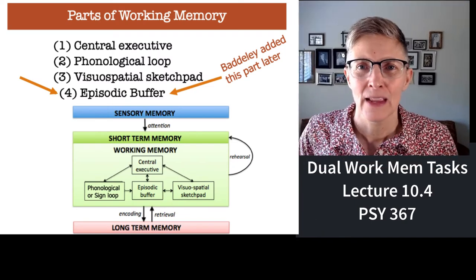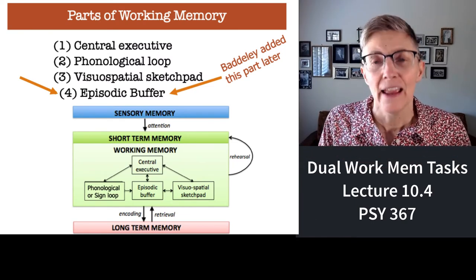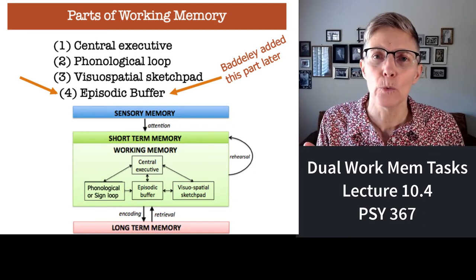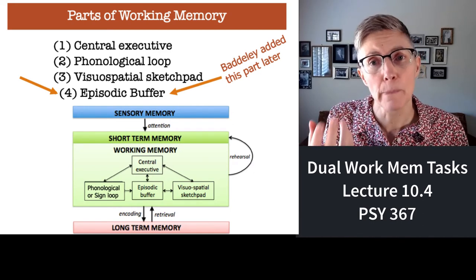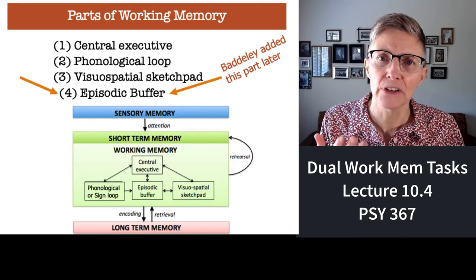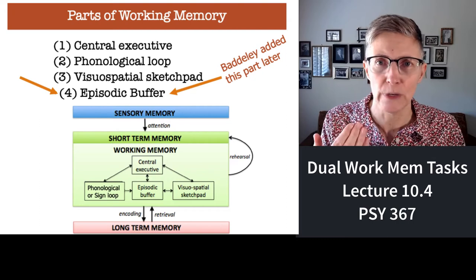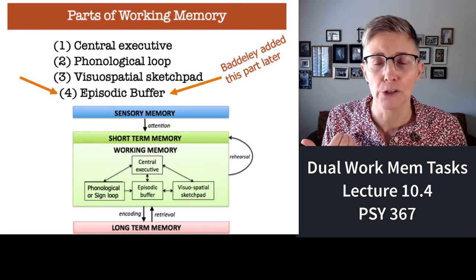Welcome back. The fourth piece of working memory I want to tell you about is something called the episodic buffer. This is a piece that Baddeley added later to his model. He needed to figure out a way to get working memory to be influenced by meaning. So the episodic buffer is basically the go-between between short-term memory or working memory and long-term memory.